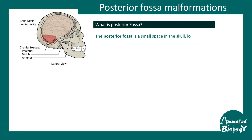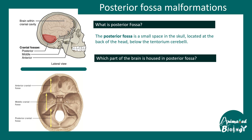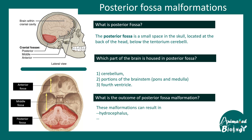What is the posterior fossa? The posterior fossa is a portion of the skull that is located at the back of the head and it is below the tentorium cerebellum. You can see that region in red. The cerebellum, portion of the brainstem, and fourth ventricle are inside the posterior fossa. Posterior fossa malformations lead to hydrocephalus, motor deficits, and developmental delays.